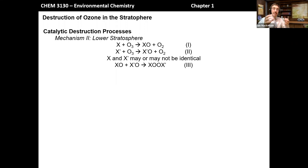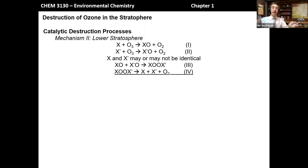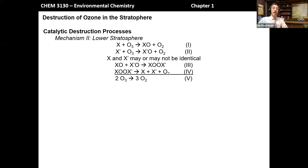This peroxide decomposes spontaneously to generate a single molecule of O2 and the liberated free atoms X and X-prime, which may or may not be identical. If we take all four of these reactions and sum them, all of the X, XO, X-prime, and X-prime-O groups cancel out, and we're left only with a net reaction where ozone is converted directly into O2. That is the overall reaction, which undergoes these four individual steps.